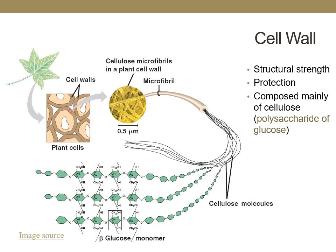The cell wall of plants is located outside of the cell membrane and gives the plant cell all of its structural strength. Plants can't swim away from predators, so they must have extra protection. The cell wall is composed mostly of cellulose, which is a polysaccharide of glucose molecules. However, due to the type of bond formed between the glucose molecules, humans cannot digest cellulose and rely on gut microbes to partially digest it for us.